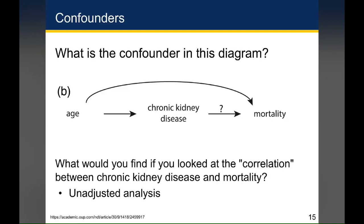If you wanted to look at the risk of dying as a result of chronic kidney disease, the obvious confounder would be age, because as people age their risk of chronic kidney disease goes way up, and age is also associated with mortality. In order to evaluate the relationship between chronic kidney disease and mortality, you'd have to account for age. If you don't, and simply look at the association between chronic kidney disease and mortality, this is called an unadjusted or naive analysis. It's common in scientific papers to report an unadjusted analysis before going on to account for confounding.